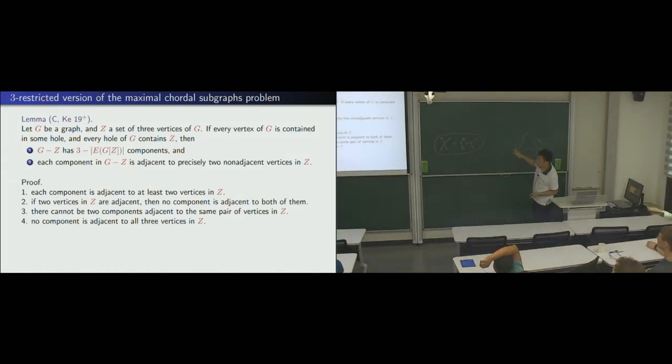Each component is adjacent at least towards this. If it's adjacent only one, for example, then these vertices are not in any hole. We can just ignore that. Right? Okay, so, the second one, see, if they are already adjacent, then there cannot be such a component. Otherwise, this is a hole here, and does not involve this vertex, does not satisfy our strong condition. That's exactly why we need this strong condition. Every hole contains both. The third one is this. So, if they are adjacent, there is no such a component. The third one is, so, there cannot be two components adjacent to the same pair. Then, again, you have a hole avoiding this vertex.